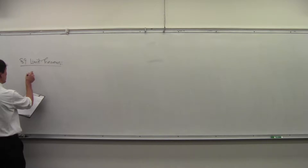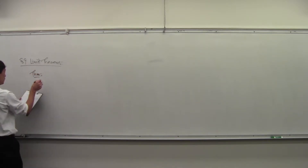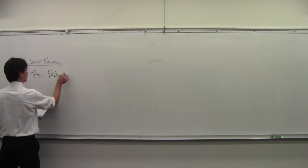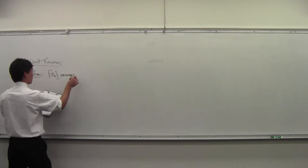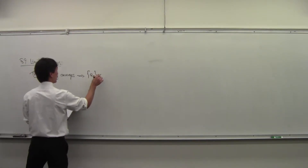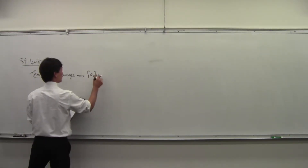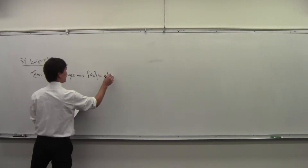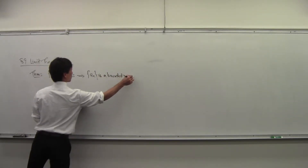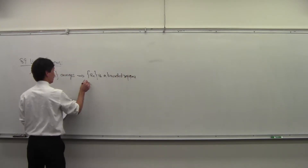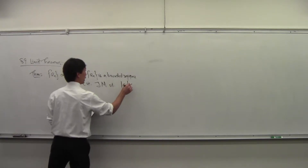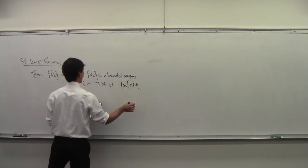I guess there's enough time to prove the first theorem. The first theorem goes like this: if a sub n converges, then it is a bounded sequence. In other words, there exists an M that traps all values of a sub n.